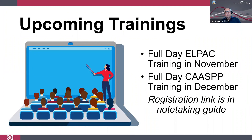To wrap up, we'd like to promote the next two upcoming training opportunities. We have two full-day trainings under the new coordinator umbrella — the first in November for ELPAC, and the second in December for CAASPP. These are hosted by 15 COEs across the state. The link to register is in your note-taking guide and will take you to the training opportunities webpage where you can find registration links under the month they will happen.